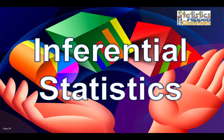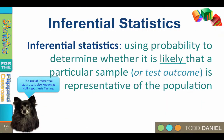We now have two new tools to work with. We know about samples that represent their populations, and we know about simple probability. Now it is time to use those two tools together. Inferential statistics allow us to determine the probability that a sample mean represents the population from which it was drawn. Inferential statistics, also known as null hypothesis testing, use probability to determine whether a particular sample or test outcome is representative of the population from which the sample was originally drawn.